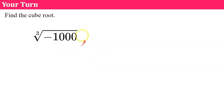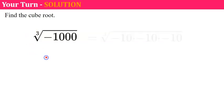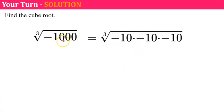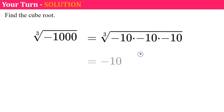Your turn — find the cube root of negative 1,000. Please pause and come back when you're ready. Welcome back. The radicand negative 1,000 could be represented by negative 10 multiplied by negative 10 multiplied by negative 10, so the cube root of negative 1,000 is negative 10.